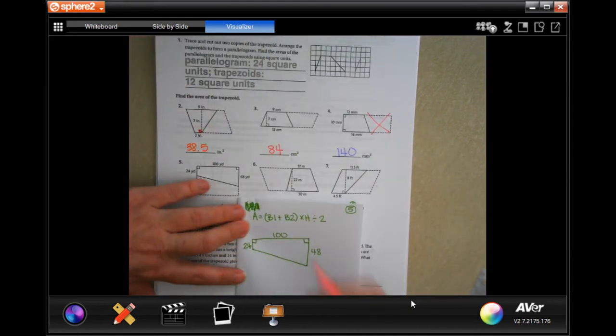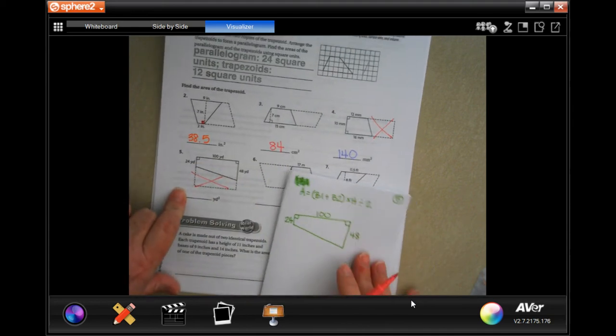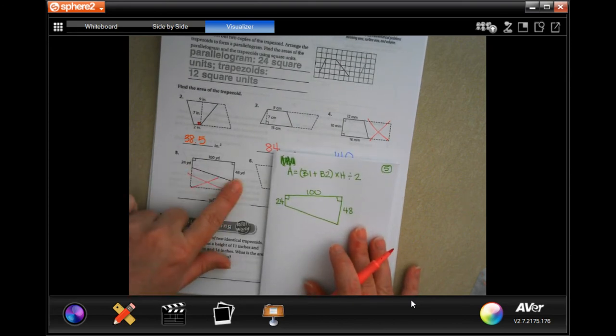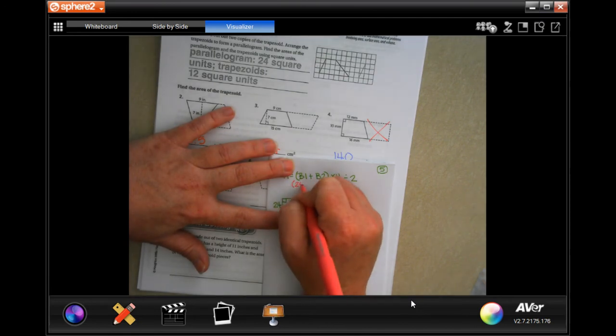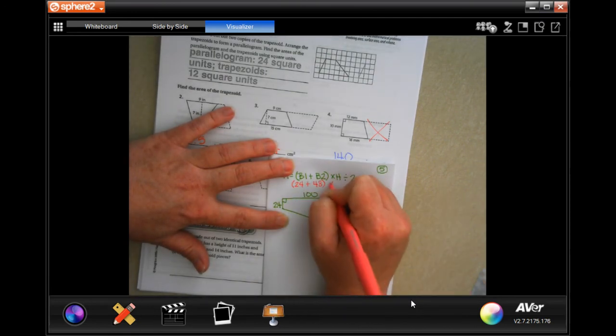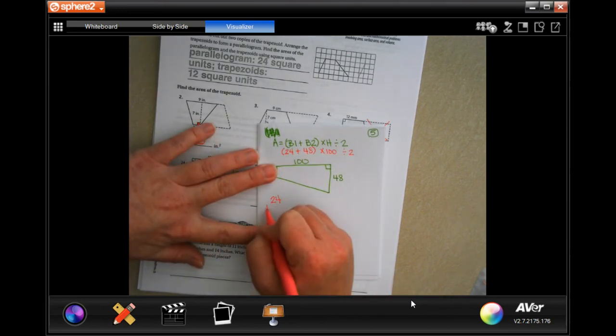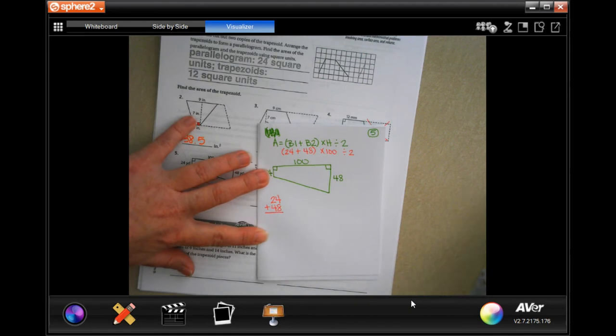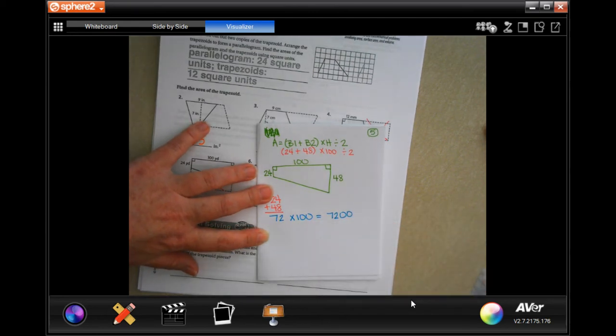Okay, we're going to do number 5. I'm going to write your numbers in. So on this one, it's going sideways. Obviously, I did not do that again. So it's going sideways. So we're just going to use the two sides of the base and the 100 as the height. We're just going to turn it. So 24 plus 48 times 100 divided by 2.